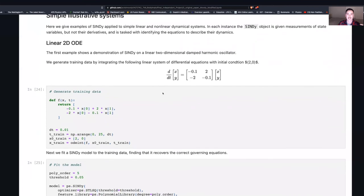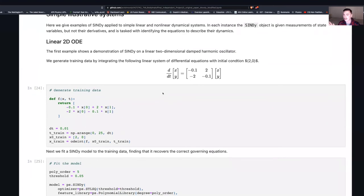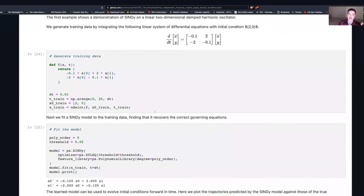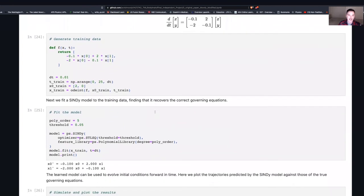The first example that we'll look at here is a linear two-dimensional damped harmonic oscillator. Hopefully, we all remember positively our time back in differential equations looking at harmonic oscillators. The first thing we have to do is generate the training data. The function that we're going to want CINDY to discover is going to be x dot = -0.1x + 2y and y dot = -2x - 0.01y. So I'm going to go through and feed it that function, give it its time step, train that data.